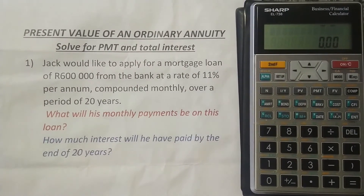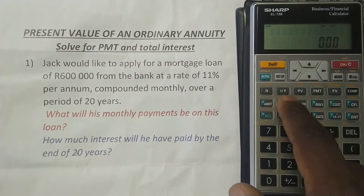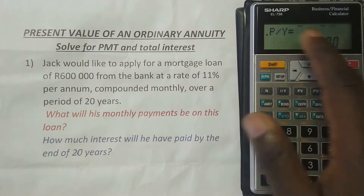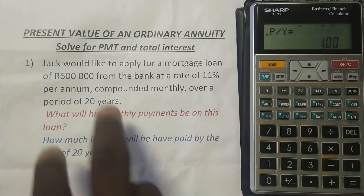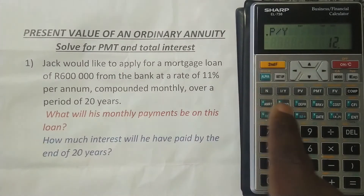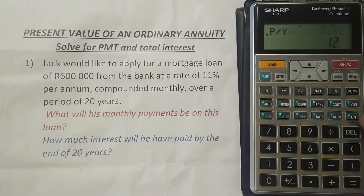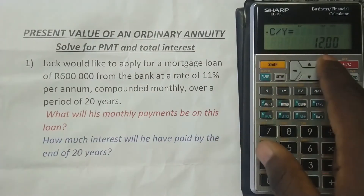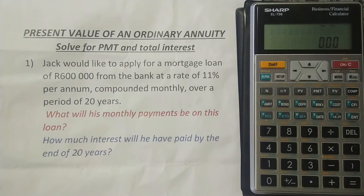By default the calculator is compounded annually. To change this, you press second function and then the I/Y key — on top of it is written P/Y, which stands for payments per year. For a mortgage loan compounded monthly, that's 12 payments per year, so I press 12. Then I press second function, I/Y, input 12, and press ENT to enter. You can see payments per year equals 12, and pressing the downward arrow shows compounding per year is also 12. The calculator has now taken the compounding of 12 into account.